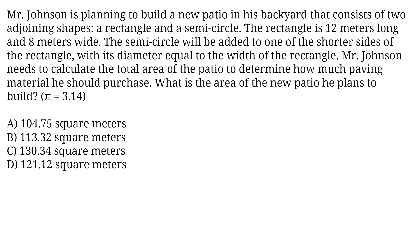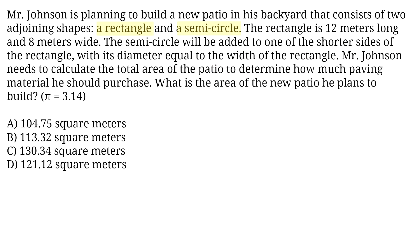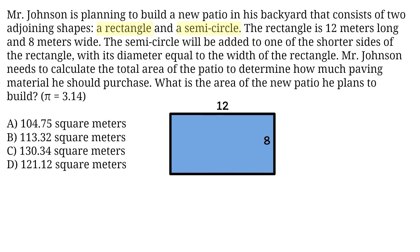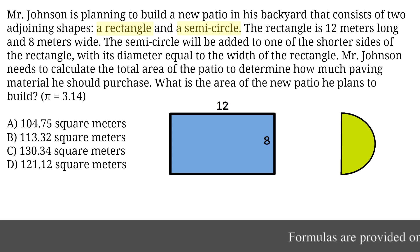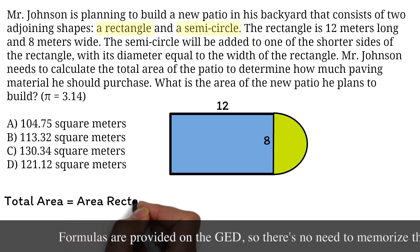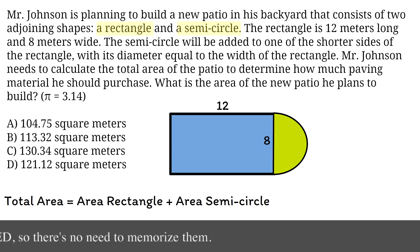This is a typical geometry word problem. For geometry, it's important to get a diagram so you can have a clear picture of what you are working on. Mr. Johnson is building a patio that consists of two adjoining shapes: a rectangle and a semicircle. The rectangle is 12 meters long and 8 meters wide, and the semicircle is attached to the shorter side. We will calculate the area of each shape and then add the areas.